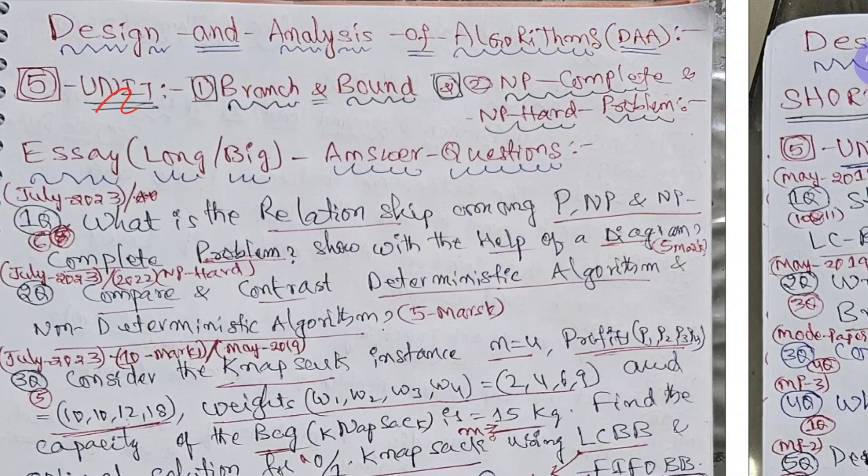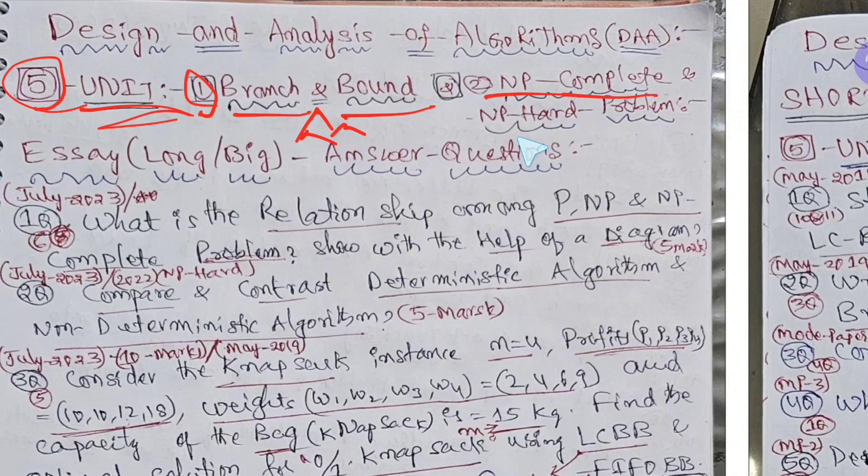So now I will zoom a little bit and explain one by one. See here, design and analysis of algorithm, DAO, fifth unit. We are having two chapters, branch and bound. Branches and we are having bound wise we need to do the algorithms. This is one of the designing method or technique. NP-complete and NP-hard. First question is what is relationship among P, NP, NP-hard and NP-complete problems.